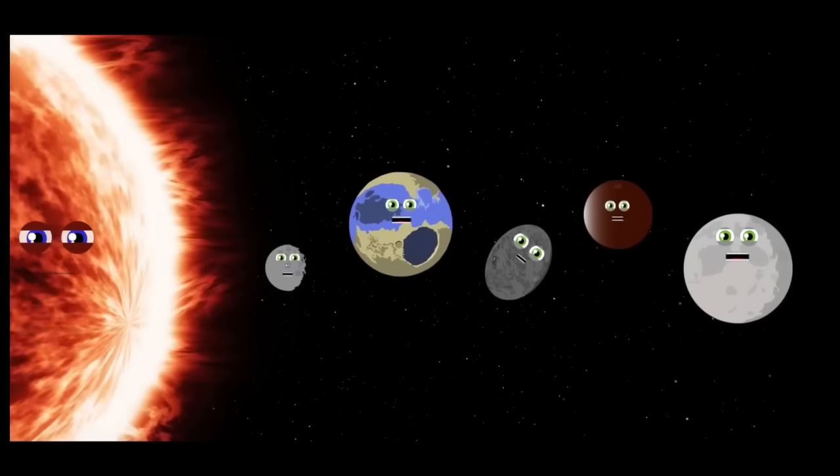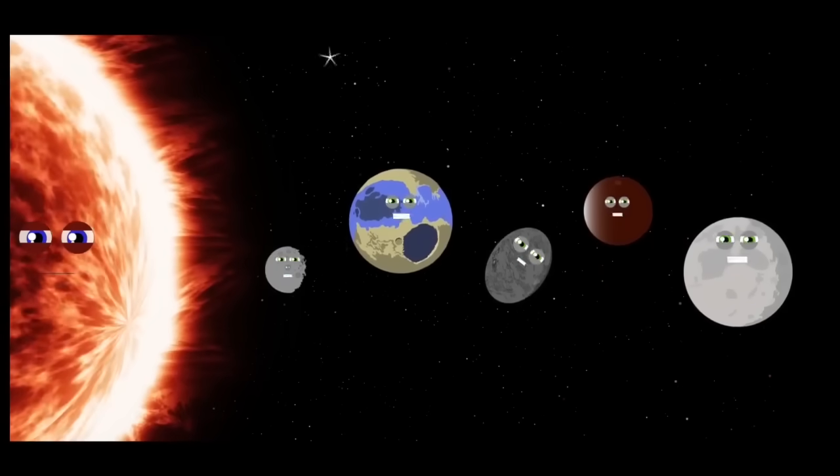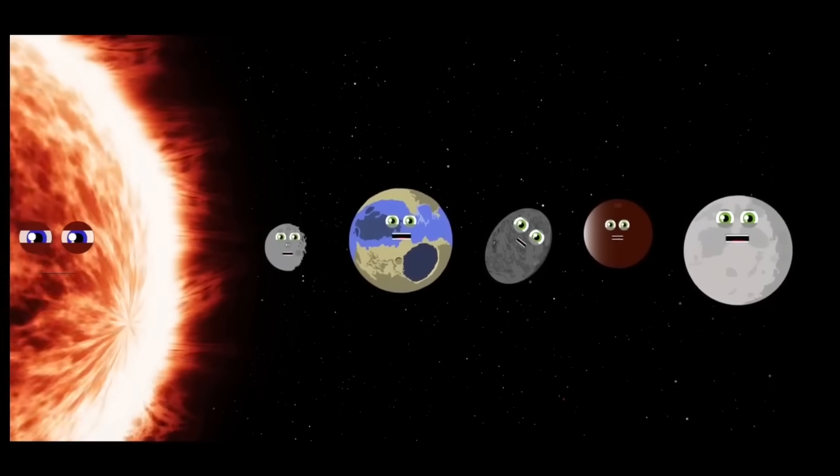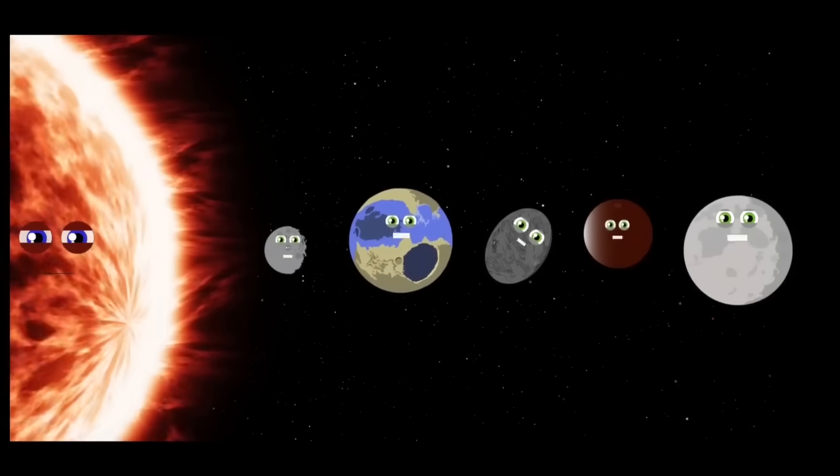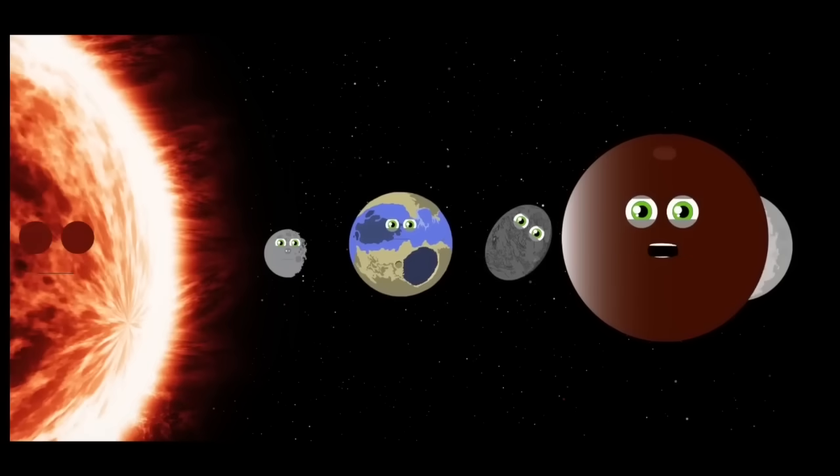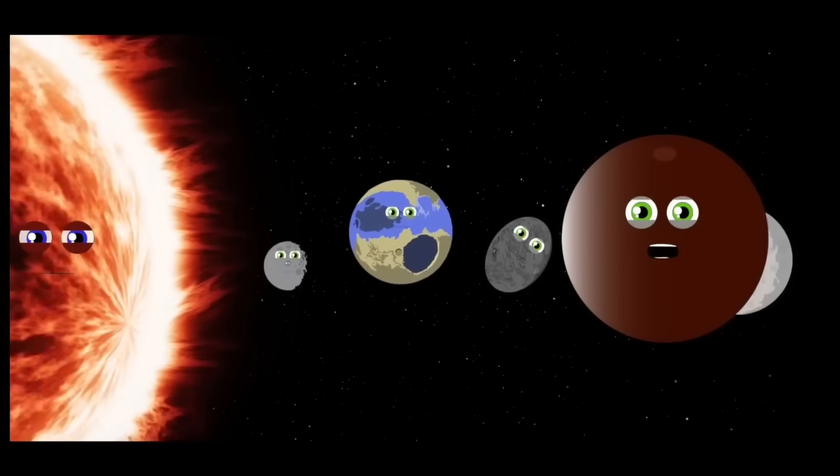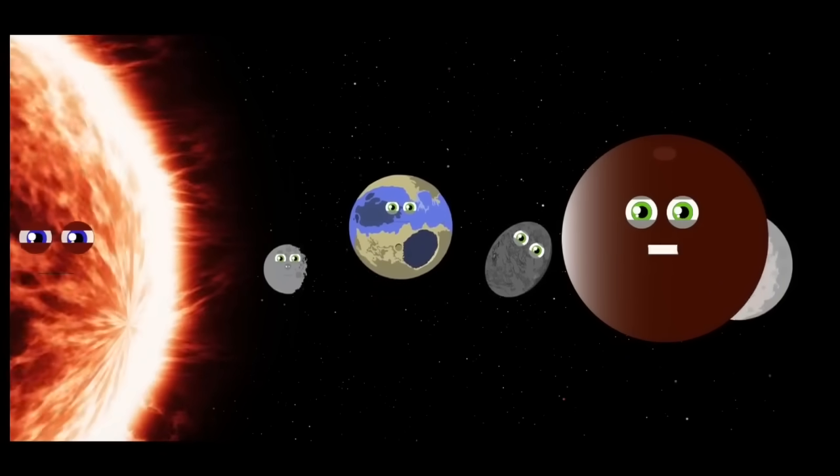There are five dwarf planets in our solar system, and we revolve around the sun. Four of us live in the Kuiper Belt. As far as planets, we're the smallest ones. I'm Makemake. I have no atmosphere. I was discovered in 2005.